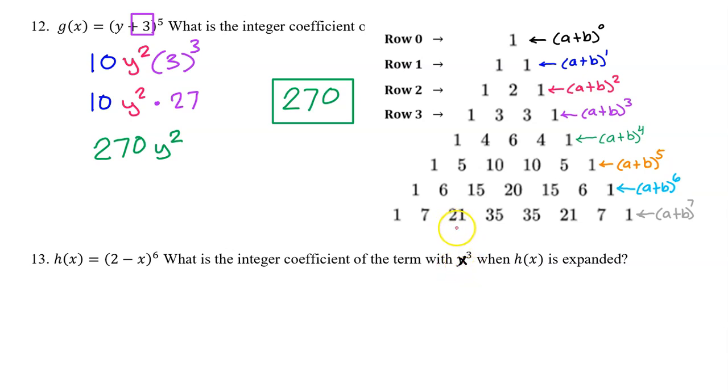So we would begin with x to the sixth power on the right-hand side this time. So be careful because the x, or the negative x rather, is on the right-hand side, which is a little bit unusual.